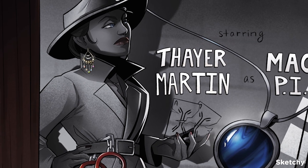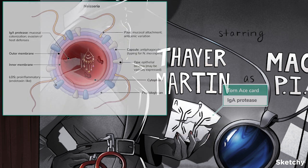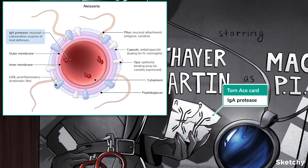Another important virulence factor is the production of IgA protease. This special protease makes it much easier for Neisseria to evade the host immune system and colonize mucosal surfaces. To help you remember that Neisseria makes an IgA protease, Mac's got our signature ace card here that's torn slightly to remind you that Neisseria can inactivate IgA.